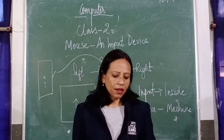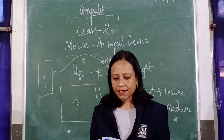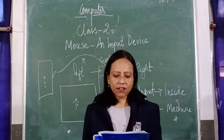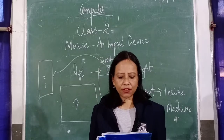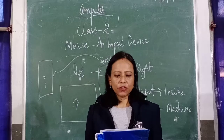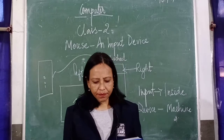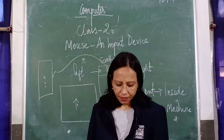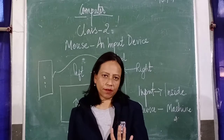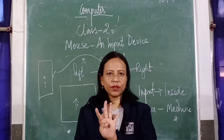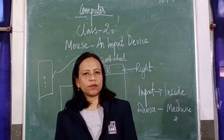A mouse is an important part of a computer. It is an input device. It is small in size and looks somewhat like a real mouse — a rodent. It is connected to a CPU cabinet through a wire. A mouse helps you to do the following: play games, draw pictures, point and select items, open a program. There are four important parts of a computer: monitor, CPU, keyboard, and the mouse.